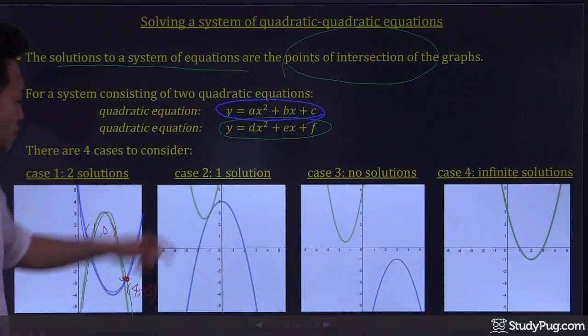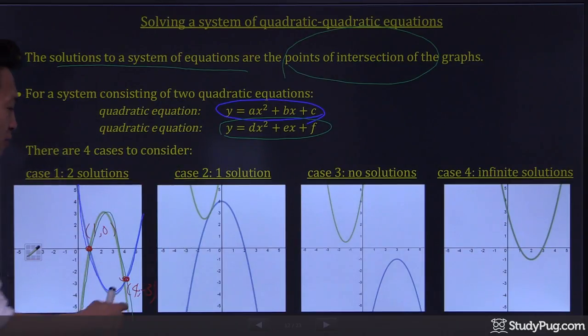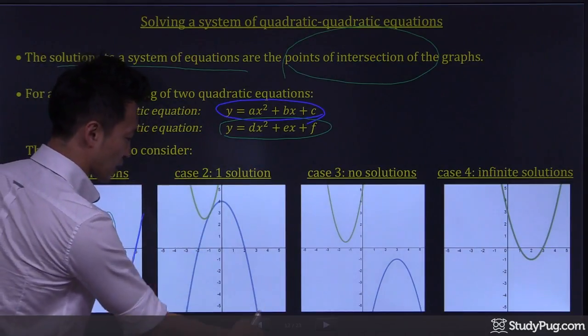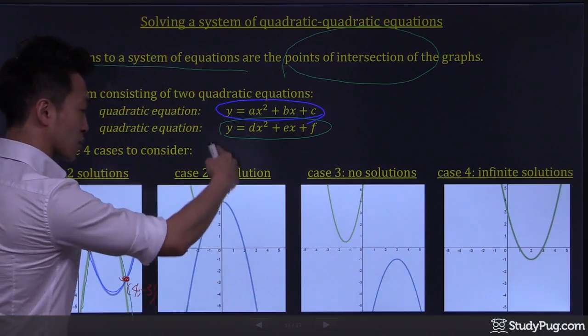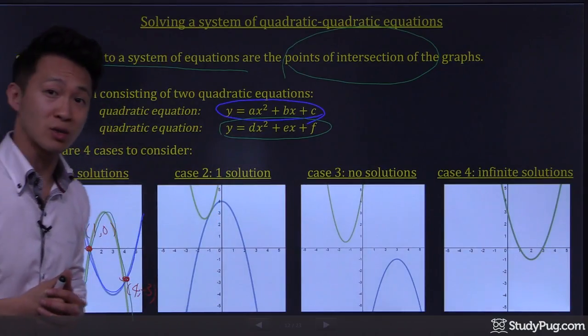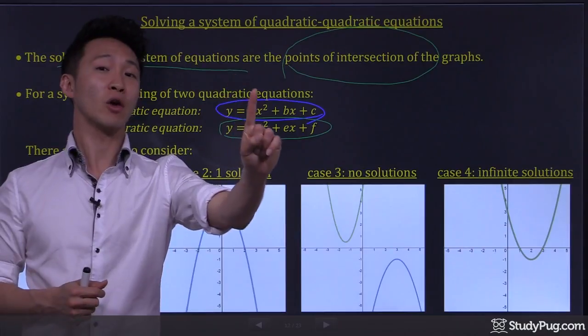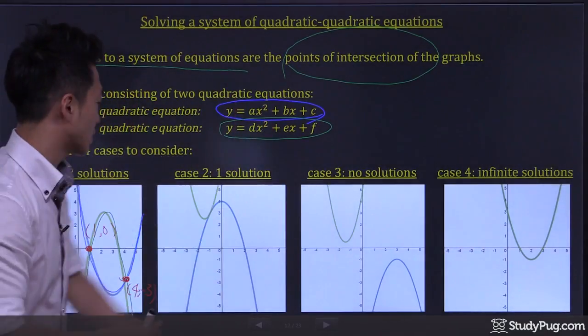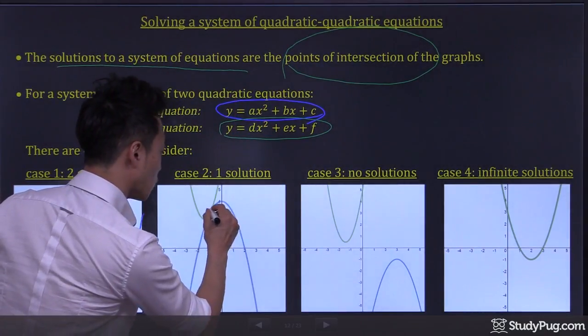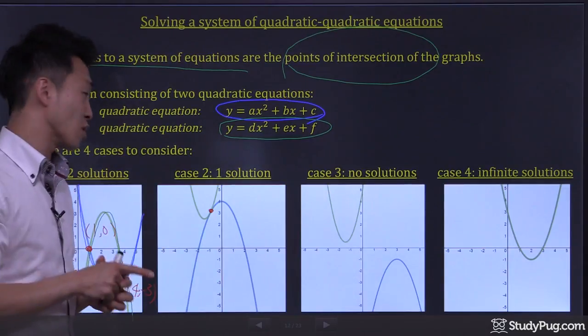Case number two: we can have a parabola that goes like this, another parabola that goes like this, and they just happen to touch at one point. That very point would be the only solution to the system.